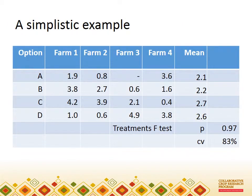Look at this simple example of data from a trial. It is far too small for a real experiment from which you could draw conclusions, but it illustrates the idea. There are four treatments, or options, compared on four farms, and crop yield was measured. Farm 3 didn't test option A, but that doesn't matter. If you do a standard analysis of variance, assuming farms are blocks, you find there is no evidence of a difference in treatment means.